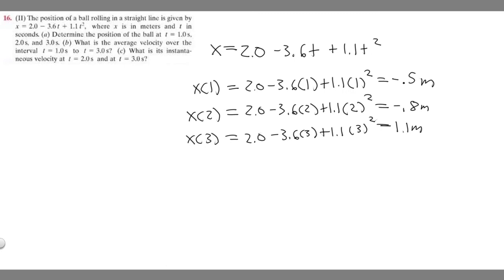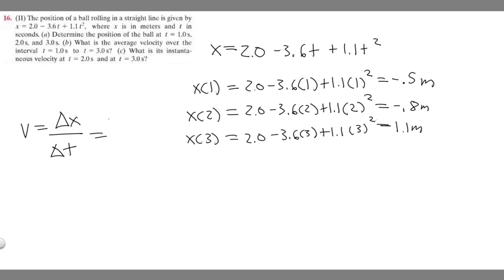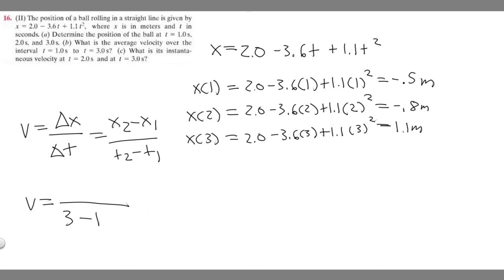Part B asks what is the average velocity over the interval t equals 1 second to t equals 3 seconds. Velocity equals change in x over change in time. We can compute this as x sub 2 minus x sub 1 over t sub 2 minus t sub 1 — final position minus starting position over final time minus starting time. Our time interval is 3 seconds minus 1 second, which gives 2 on the denominator.